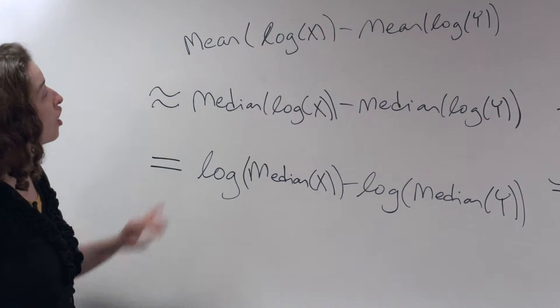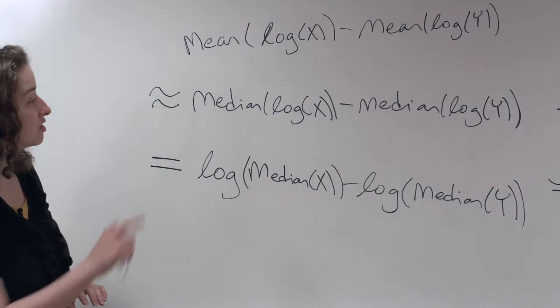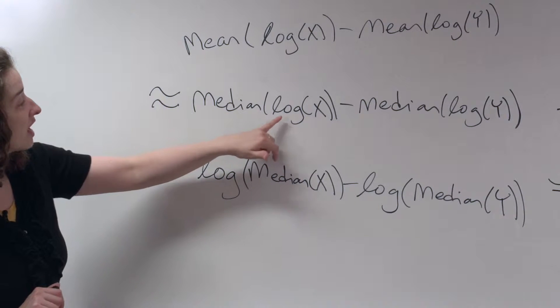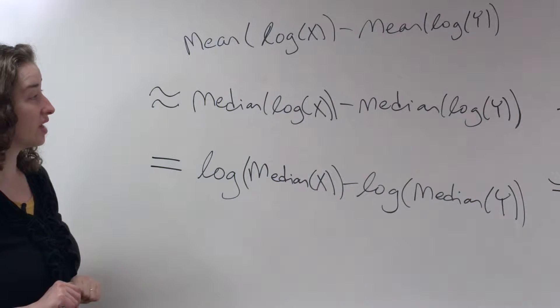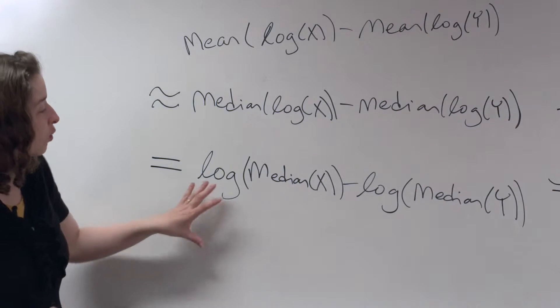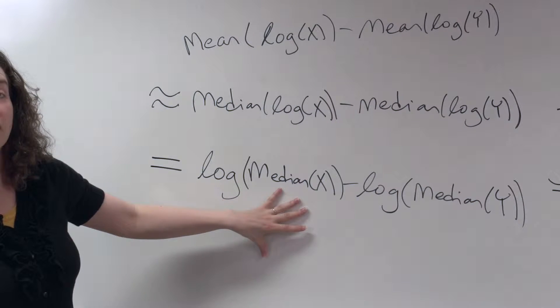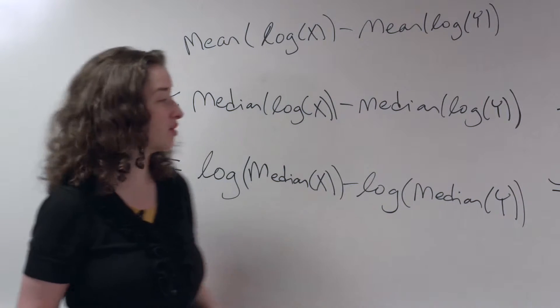So that's how we got to this stage. Only because we were able to substitute median for mean due to that symmetry, is it now okay to switch log and median, because you can switch the words log and median as we just discussed. What is the log of the median income of people in the Midwest minus the log of the median income of people in the Northeast?